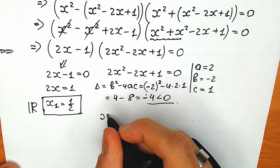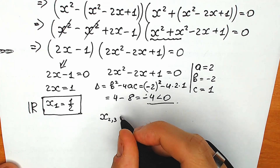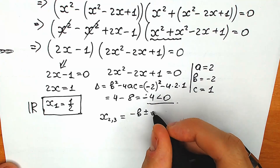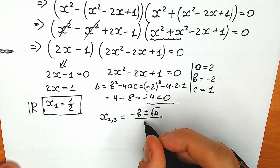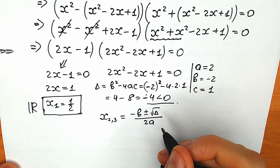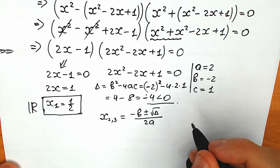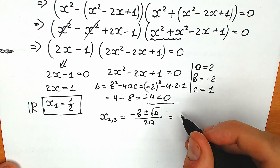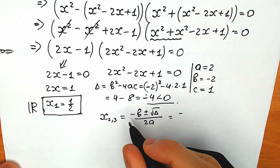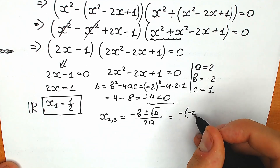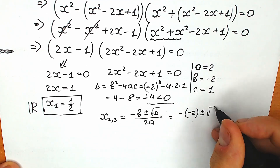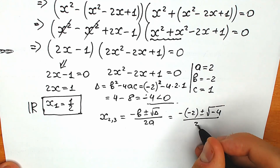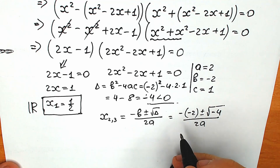Let's find these two complex roots. x₂ and x₃ equal minus b plus or minus square root of D, all over 2a — the standard quadratic formula. We plug in: minus minus 2, plus or minus square root of minus 4, all over 2 times 2.